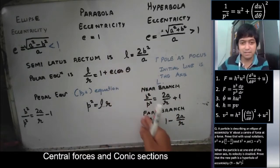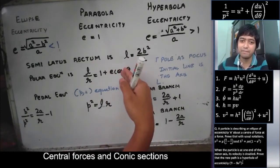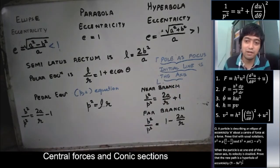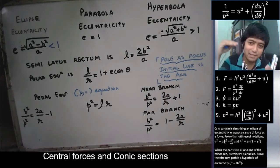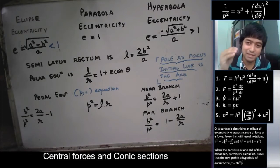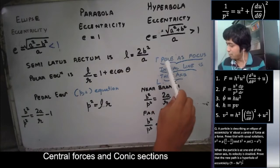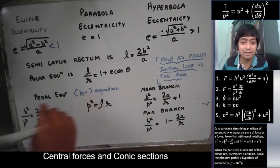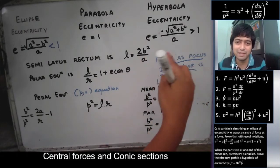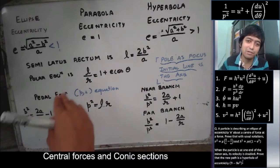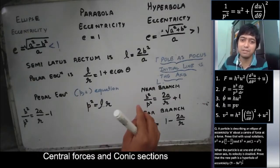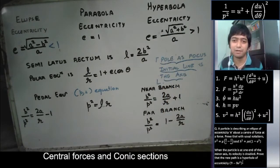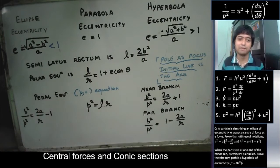These equations for these conics have been derived using the pole as the focus and the initial line as the axis. So when the center of force is at the pole, we can use these equations. But when the central force is not at the pole — that is, not at the focus — we cannot use these equations. Keep that in mind. These equations can only be used when the central force is at the pole, which is the focus.